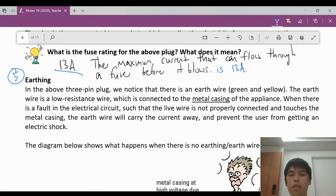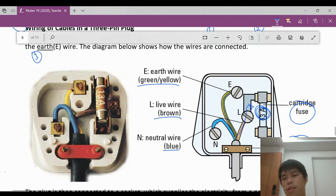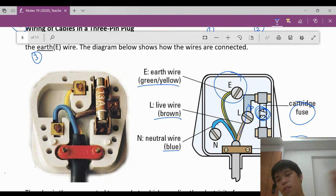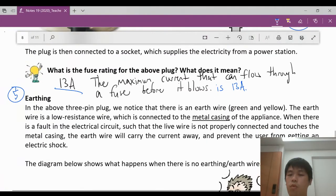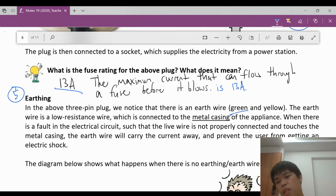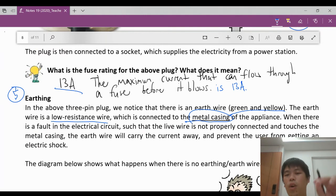Let's look at number five, earthing. So this is where your earth wire comes in. In this three-pin plug, there is an earth wire above here. What is the earth wire for? Take note that it's green and yellow. The earth wire provides a path that is low resistance. It is connected to the metal casing. So please take note, always connected to the metal casing. Why is it useful? In the event there is a fault in the electrical circuit, what is the fault? The live wire is not properly connected and touches the metal casing.